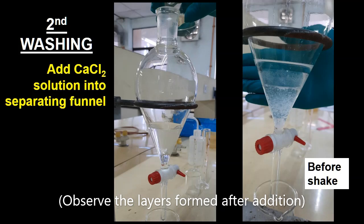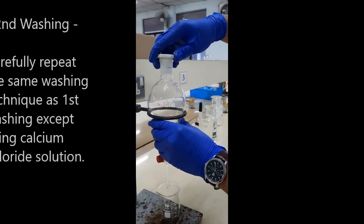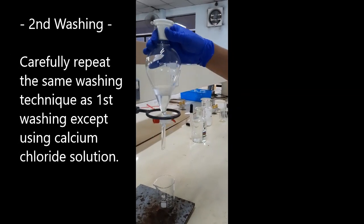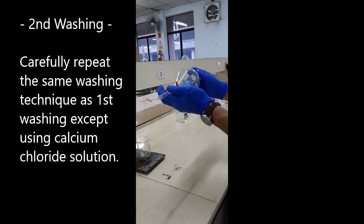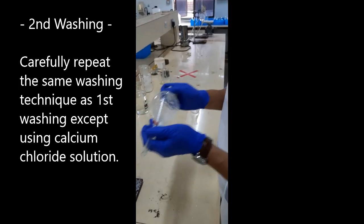Then wash the organic layer with calcium chloride solution. Repeat the same steps in the first washing.